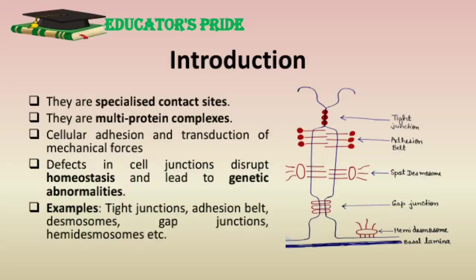Firstly, let's know about the basics of cell junctions, then I will discuss about different types of cell junctions. Many cells in tissues are linked to one another and to the extracellular matrix at specialized contact sites called cell junctions. Cell junctions are multiprotein complexes. They also build up the paracellular barrier of epithelia and control the paracellular transport. Cell junctions are especially abundant in epithelial tissues. They mainly function in cellular adhesion and cellular communication, and also help in transduction of mechanical forces. Defects in cell-to-cell junctions give rise to a wide range of tissue abnormalities that disrupt homeostasis and lead to genetic abnormalities and cancers.